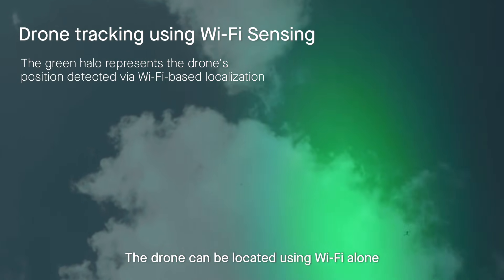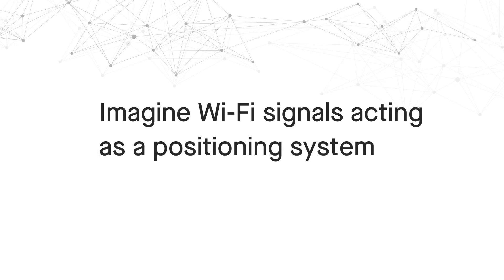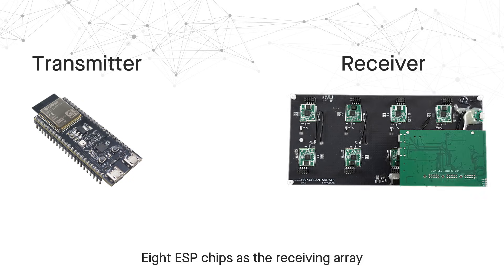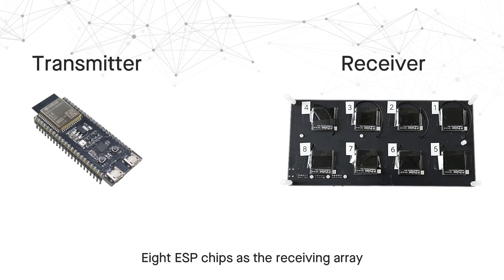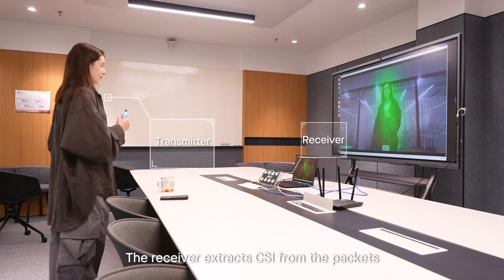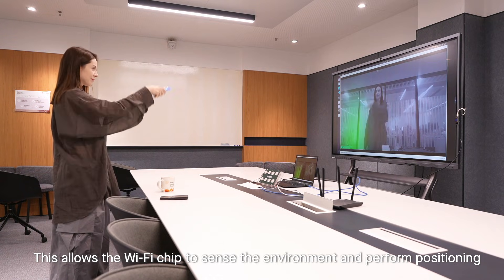Even beyond the camera's view, the drone can be located using Wi-Fi alone. We use one ESP chip as the transmitter and eight ESP chips as the receiving array. The two sides exchange only standard Wi-Fi packets. The receiver extracts CSI from the packets, allowing the Wi-Fi chip to sense the environment and perform positioning.